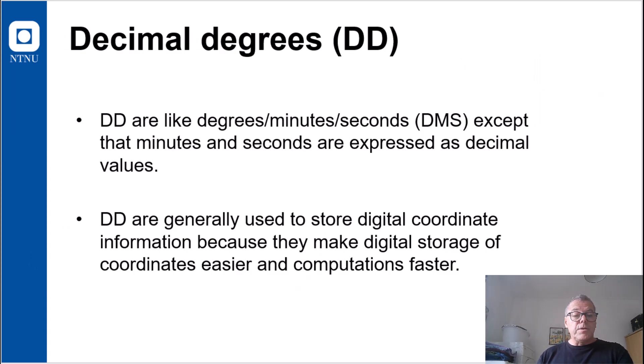In QGIS and other GIS, typically decimal degrees is the default format for geographic coordinates. Because counting up to 60 instead of counting up to 10 and 100 is not appropriate for digital environments.